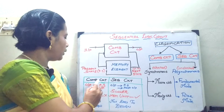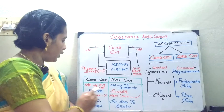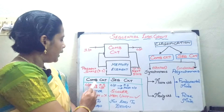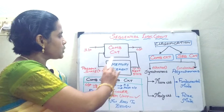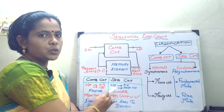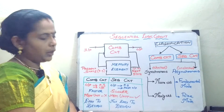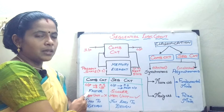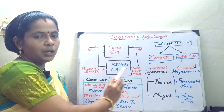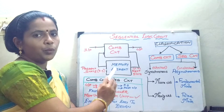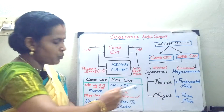Now we will see the differences between the combinational circuit and a sequential logic circuit. For a combinational circuit, the output depends upon the present state. Whereas for a sequential circuit, it depends upon the present state as well as the past output. For a combinational circuit, whenever I give some input — suppose I want to perform addition using an OR gate — I get the output immediately, so it is faster.